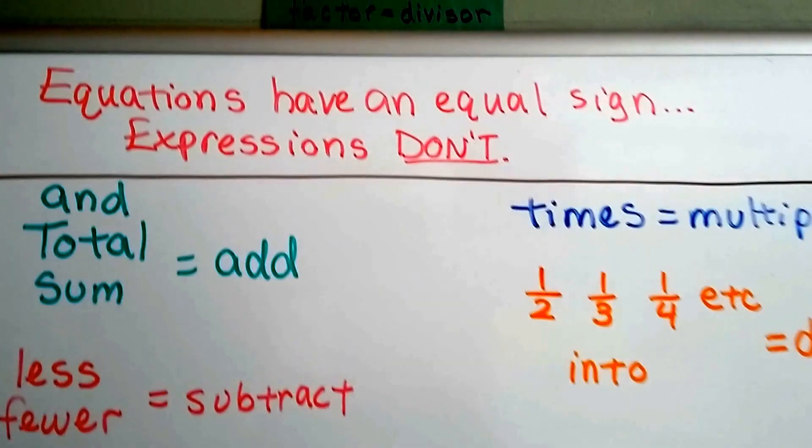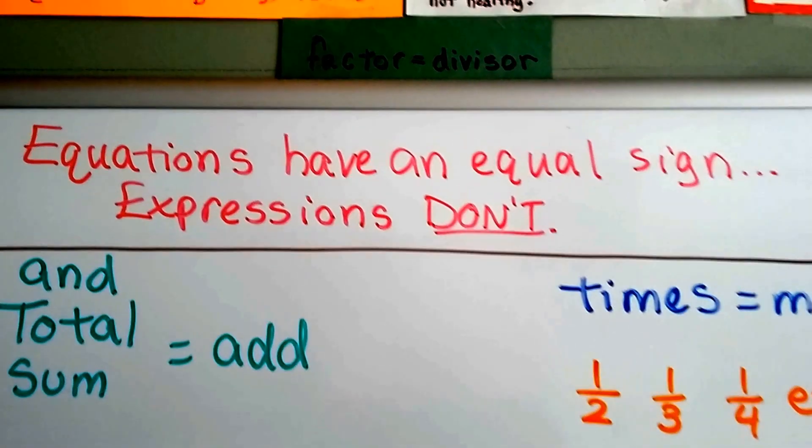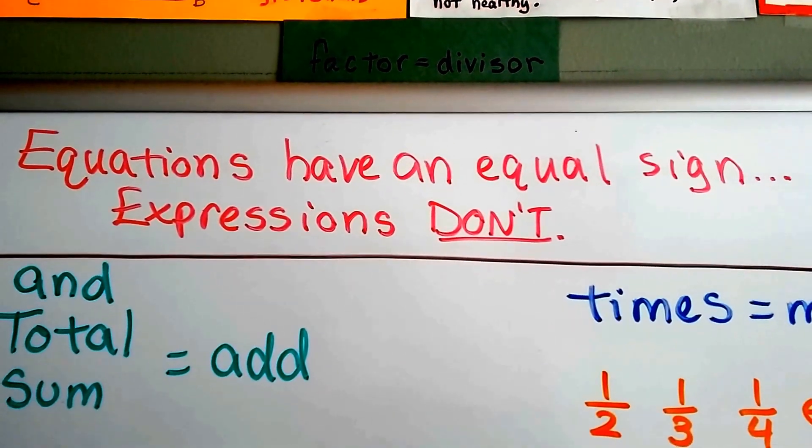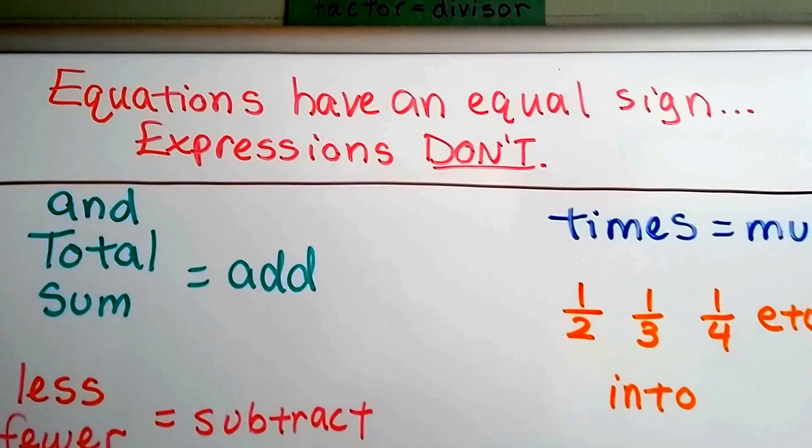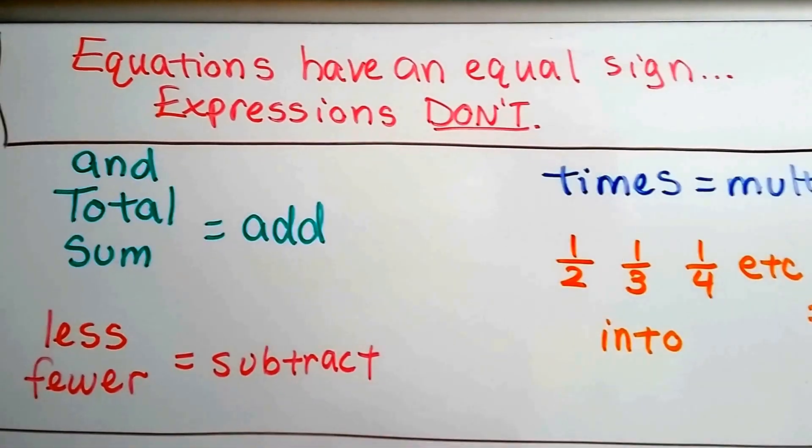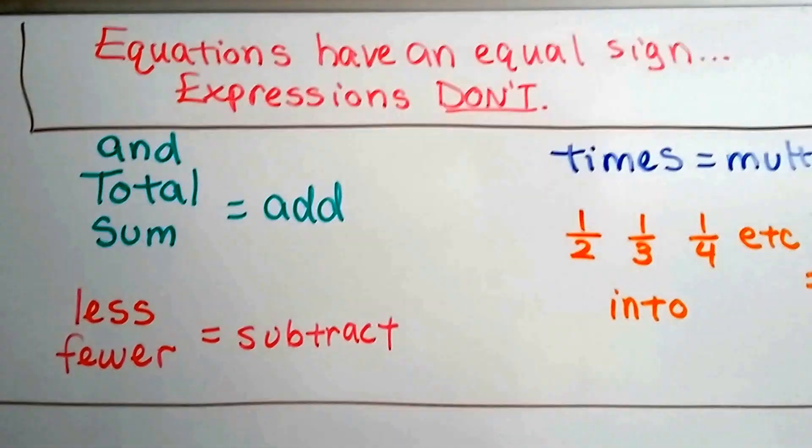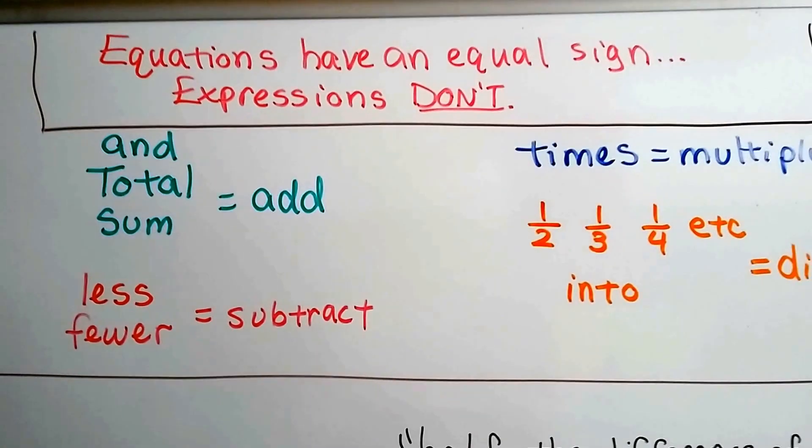If you remember, equations have an equal sign and expressions don't. That's how you can tell them apart. Expressions just have terms in them, a bunch of variables and coefficients. We're going to talk about phrases to algebraic expressions.